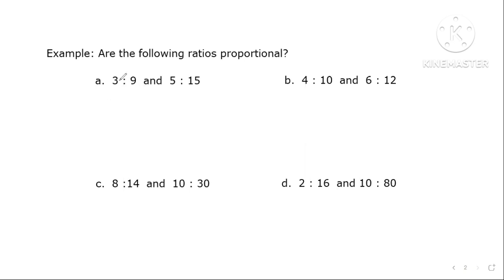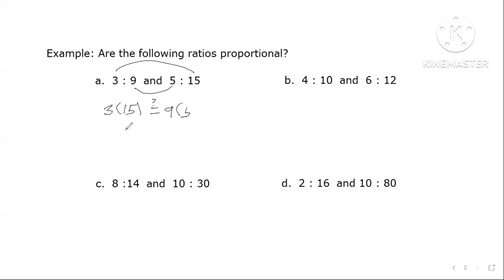Let's go to letter a. Is the product of 3 and 15 equal to the product of 9 and 5? Let's see — 3 times 15 equals 45, and 9 times 5 is also 45. So they are equal. The answer is yes.